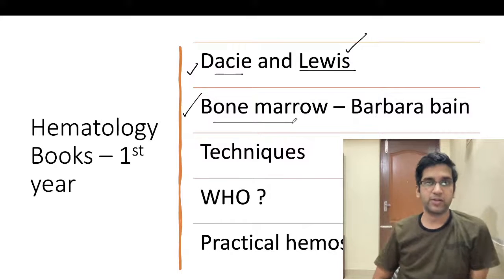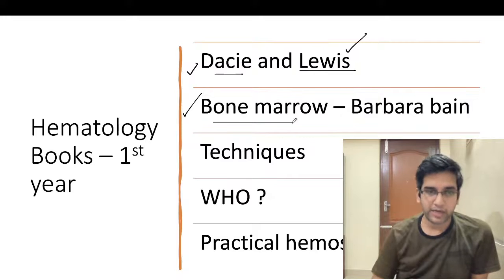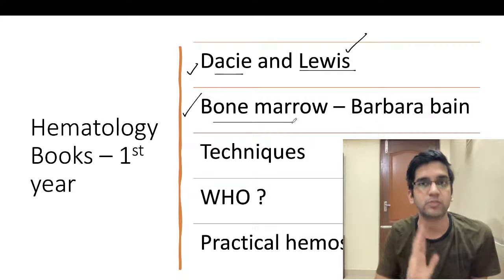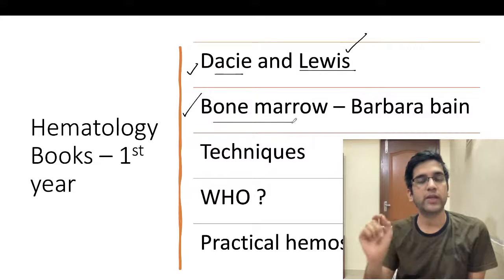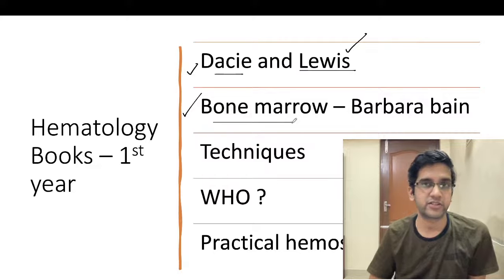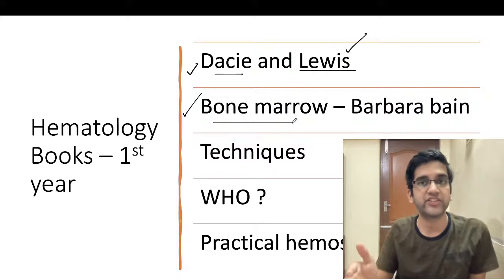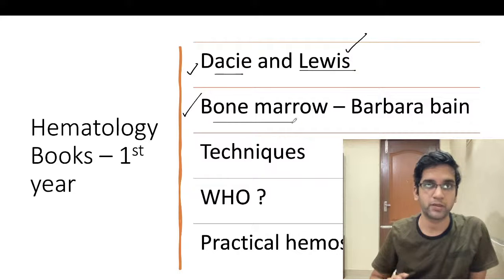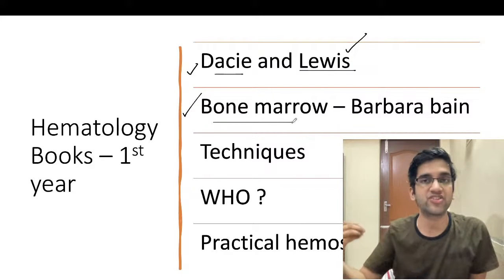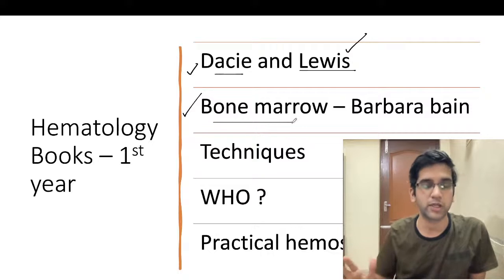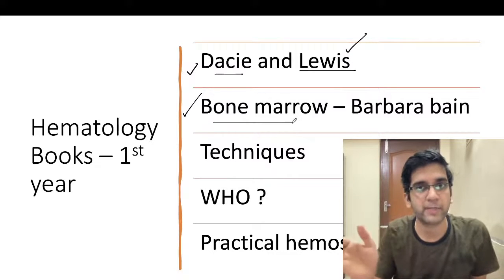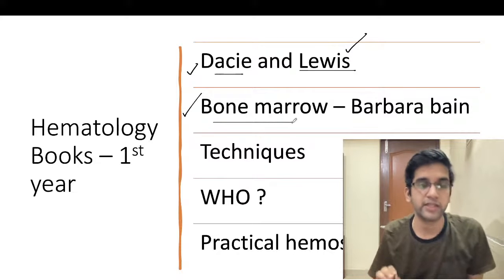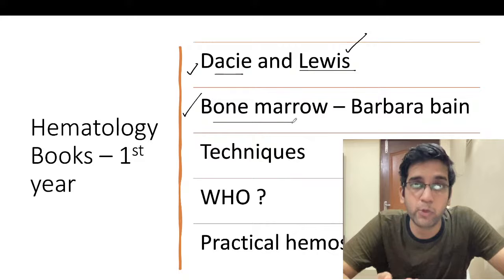The next big thing in hematology is bone marrow aspiration and biopsy. There's a book called Barbara Bain. The initial aspects — what does normal bone marrow look like, when do I call a bone marrow adequate, and how do I identify differences — this alone is enough in the first three months of hematology posting. You need not diagnose leukemia or stage bone marrow biopsies. If you know what a normal metamyelocyte looks like, that's enough.